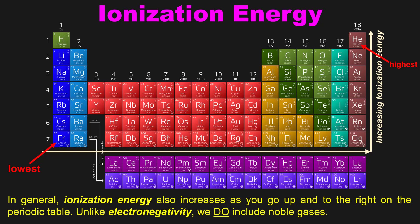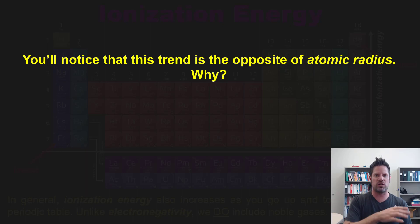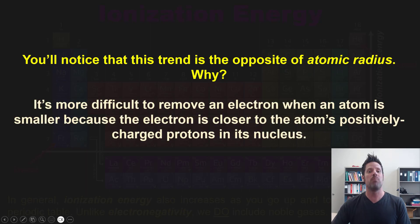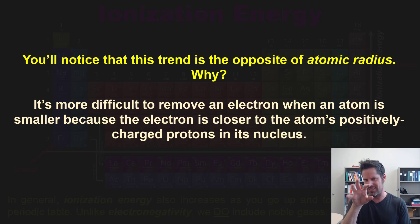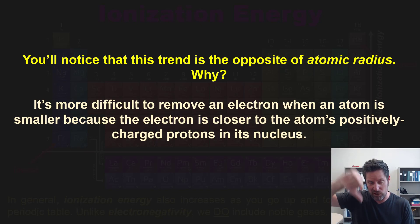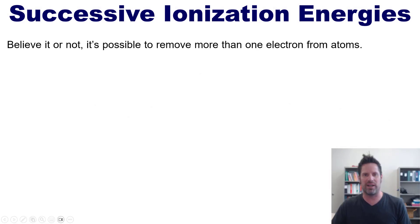This trend is the opposite of the trend for atomic radius, and here's why: it's more difficult to remove an electron when an atom is smaller, because the electron is closer to the atom's positively charged protons in its nucleus. Thus as an atom gets smaller, ionization energy gets bigger.